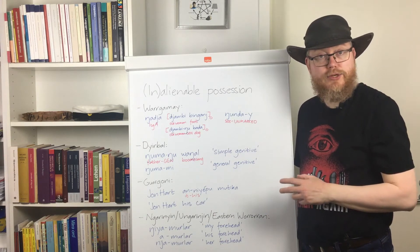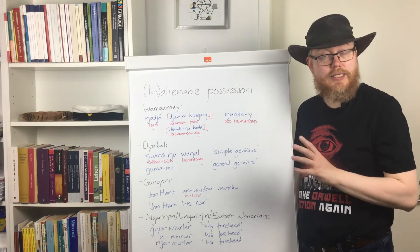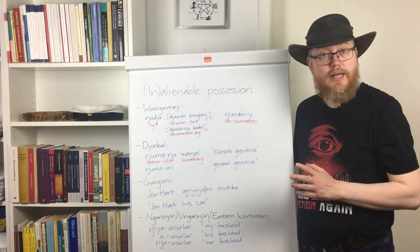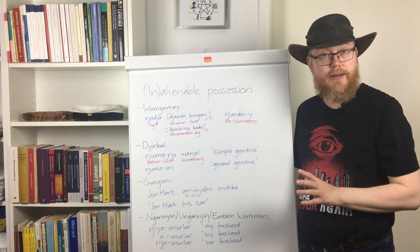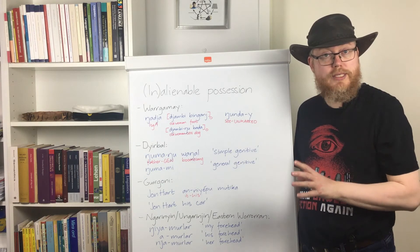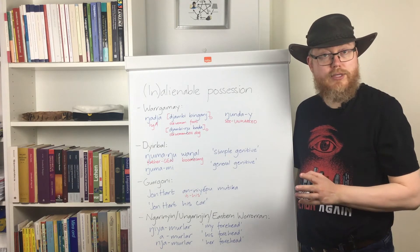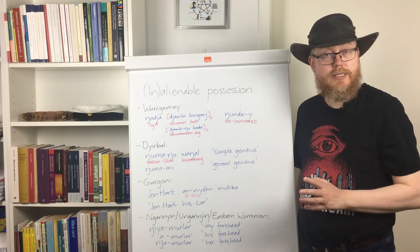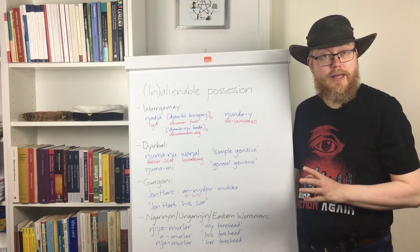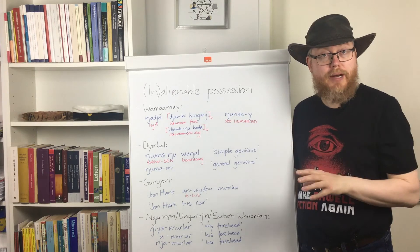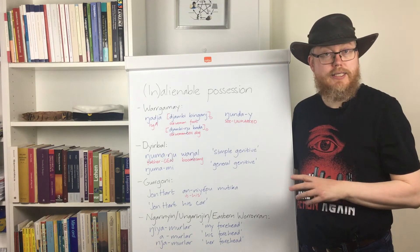I should mention that Dixon seems to be the only one who does not recognize Pama-Nyungan as a language family. I do realize it is hard to establish conclusively that Pama-Nyungan is a language family using historical linguistic methods, due to the fact that we have next to no information about Australian languages prior to the 1800s. Nevertheless, it is the reasonable assumption to make considering the similarities we see in Pama-Nyungan languages all over the continent. So I would say Dixon is the odd one out here.